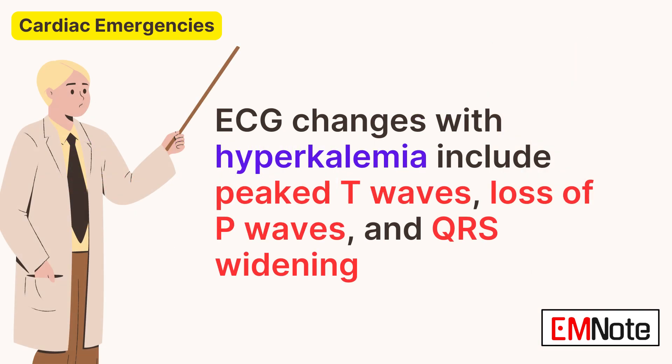ECG changes with hyperkalemia include peaked T waves, loss of P waves, and QRS widening.